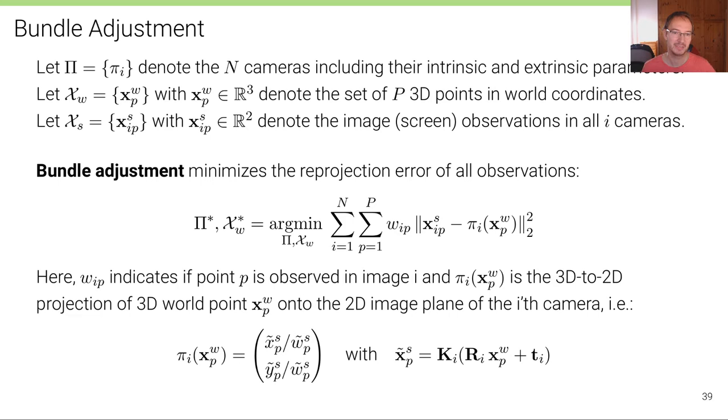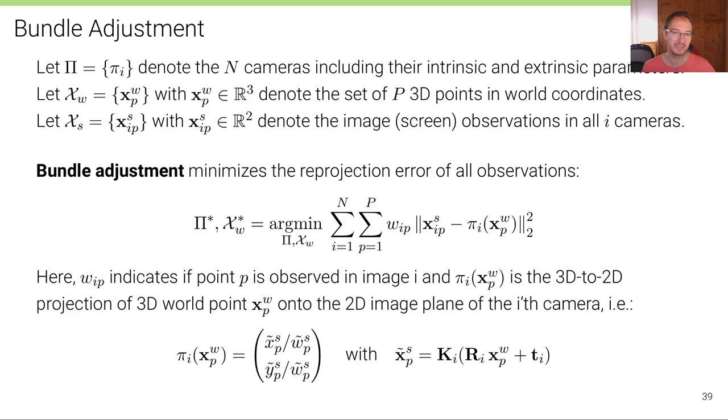Bundle adjustment then minimizes the reprojection error of all observations. This equation is very similar to the equation before where we have performed a bundle adjustment over two views for visual odometry. But except in this case here now, we optimize over more views. So we have N camera views and we have P features, P landmarks. And we minimize the difference of the observation and the corresponding projection.